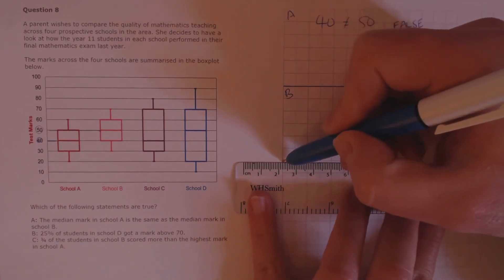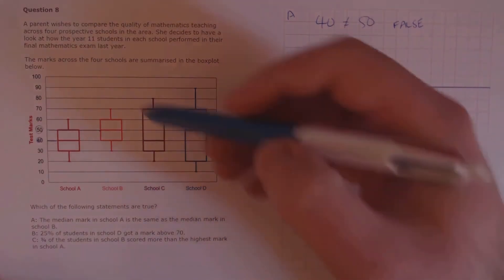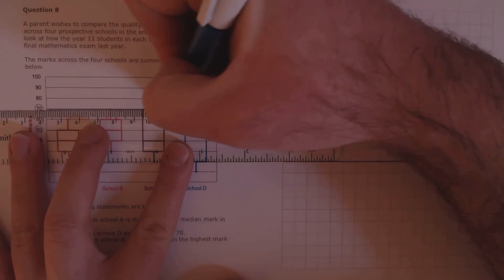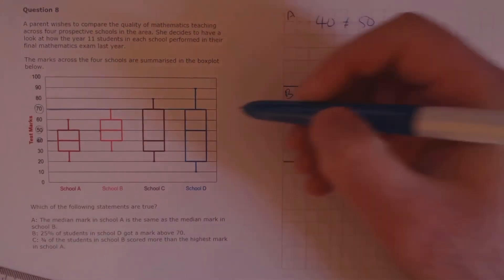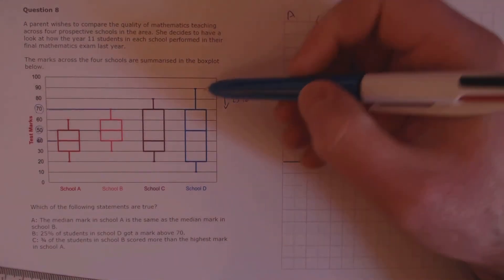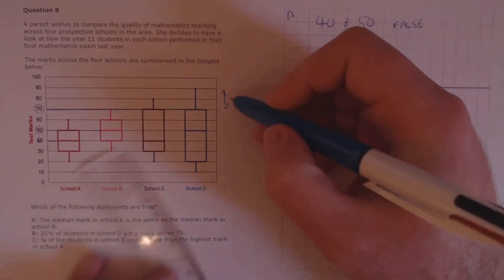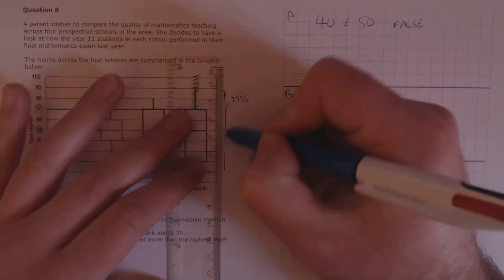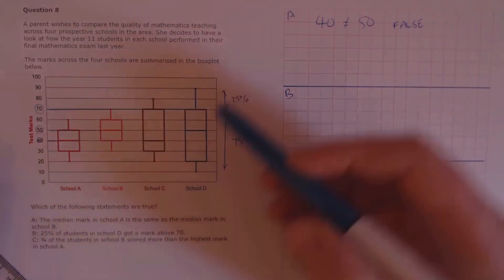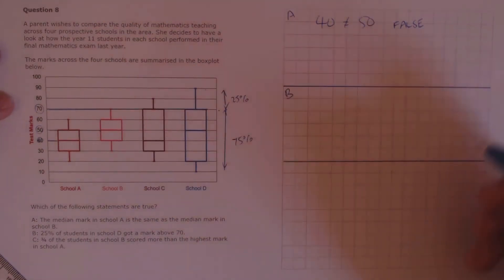B: 25% of the students in school D got a mark above 70. If we read across from 70 to school D, we see that it hits the upper quartile. The box plot divides the data into 25% between the upper quartile and the highest value and 75% from there and below. So the claim is correct — 25% of the students in school D are between the upper quartile and the highest value, 70.